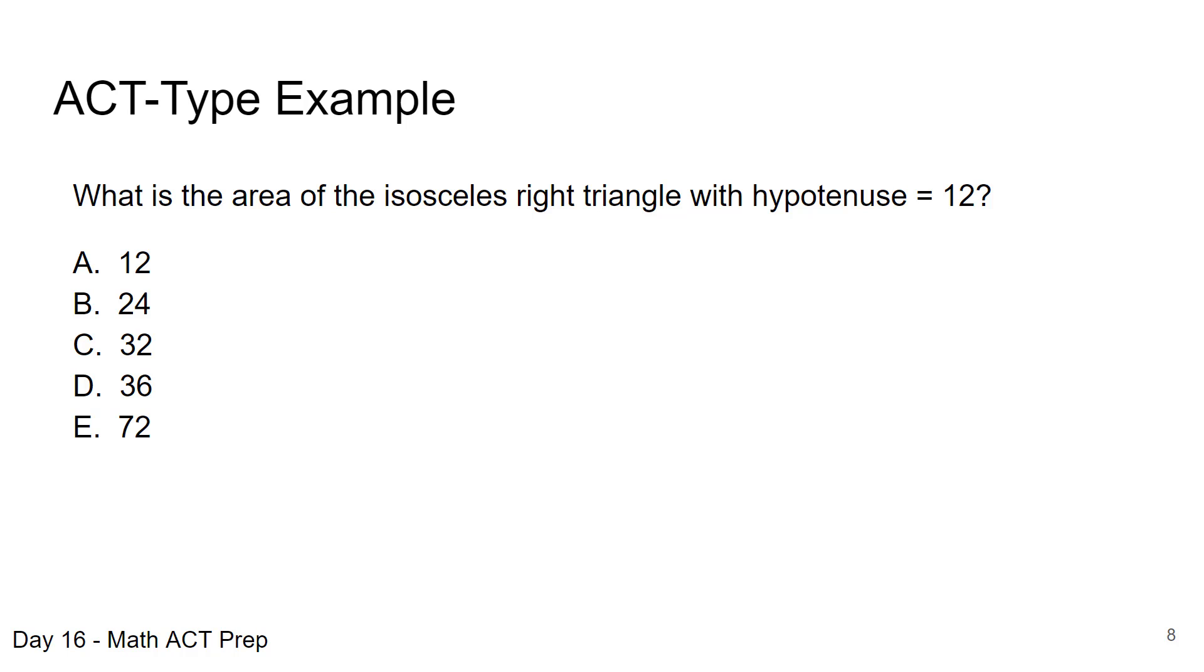So there's some important information in the question itself. It tells us we have an isosceles right triangle. So we know because it's isosceles that two sides are the same. So we usually, if we're talking about the Pythagorean theorem with a squared plus b squared, we usually use a and b. So in this case, we can just say a is the same as b, which is equal to x. We can use one variable.